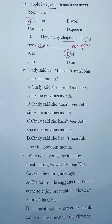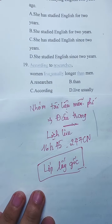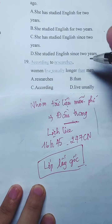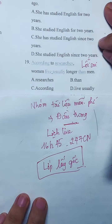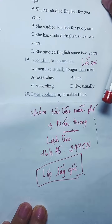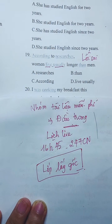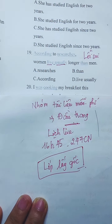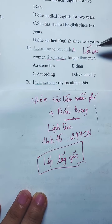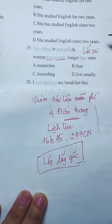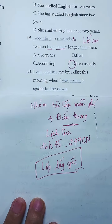Mình qua câu dễ trước, câu 19 là tìm lỗi sai. Động từ và trạng từ chỉ tần suất: theo các nhà nghiên cứu, phụ nữ thường sống lâu hơn đàn ông. Phải viết là 'usually live' chứ không phải 'live' đứng trước. Đáp án là D. Trạng từ chỉ tần suất đứng trước động từ.